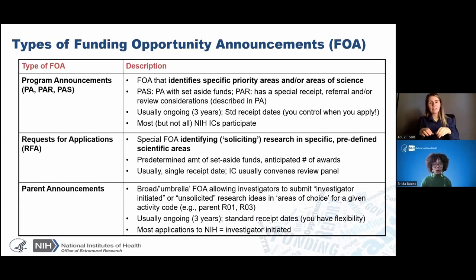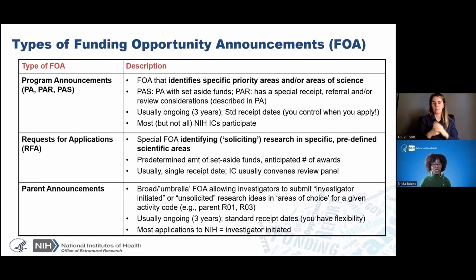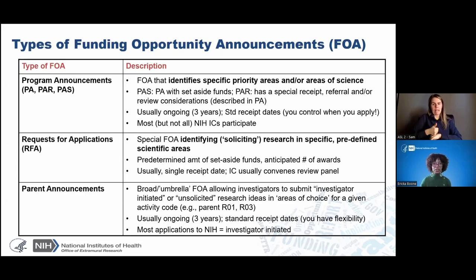Program announcements are FOAs that identify specific program areas of science. They can have specific set-aside funds and specific review dates, and they're usually ongoing with standard receipt dates, so you can control when you apply. Requests for applications are special FOAs that solicit research in very specific, predefined areas. There's a predetermined amount of set-aside funds as well as a set number of awards provided by the supporting ICs, and there's usually only one receipt date.